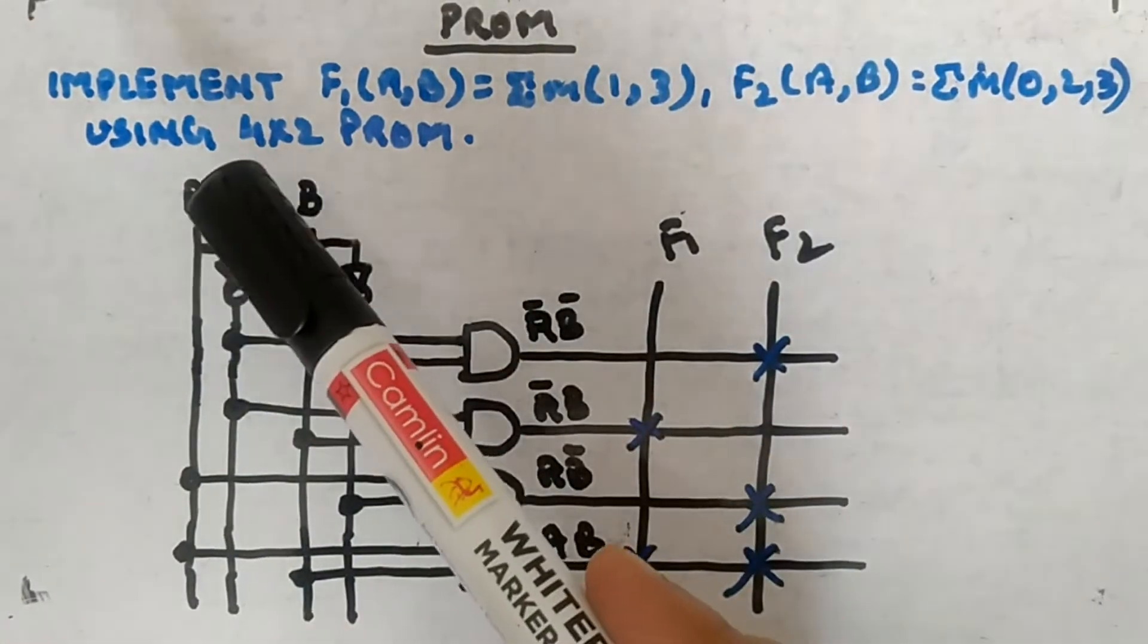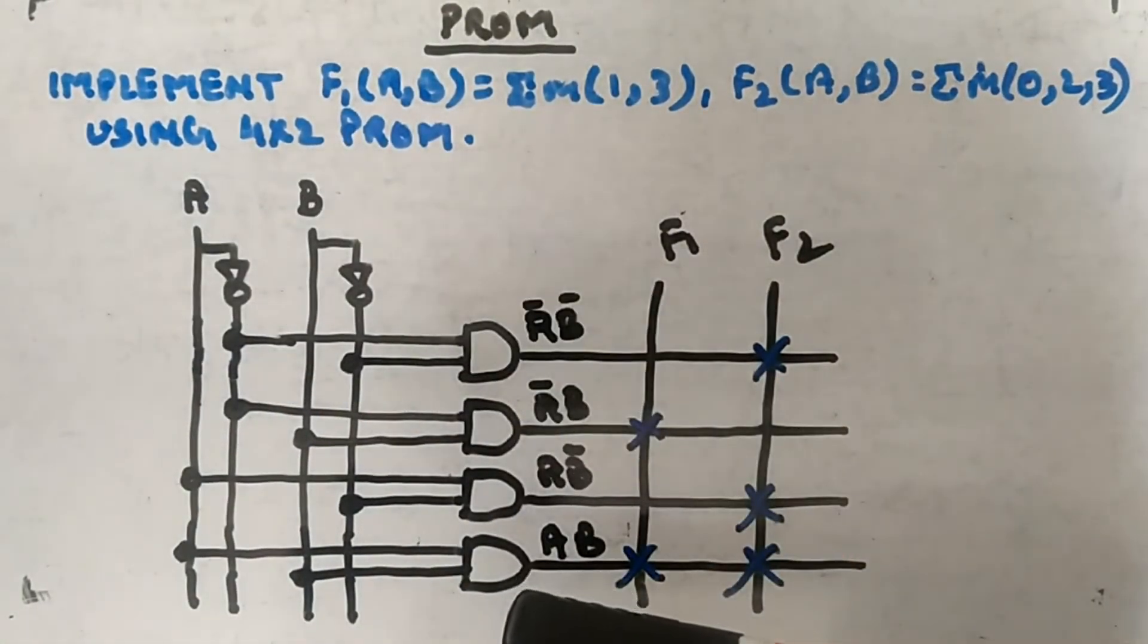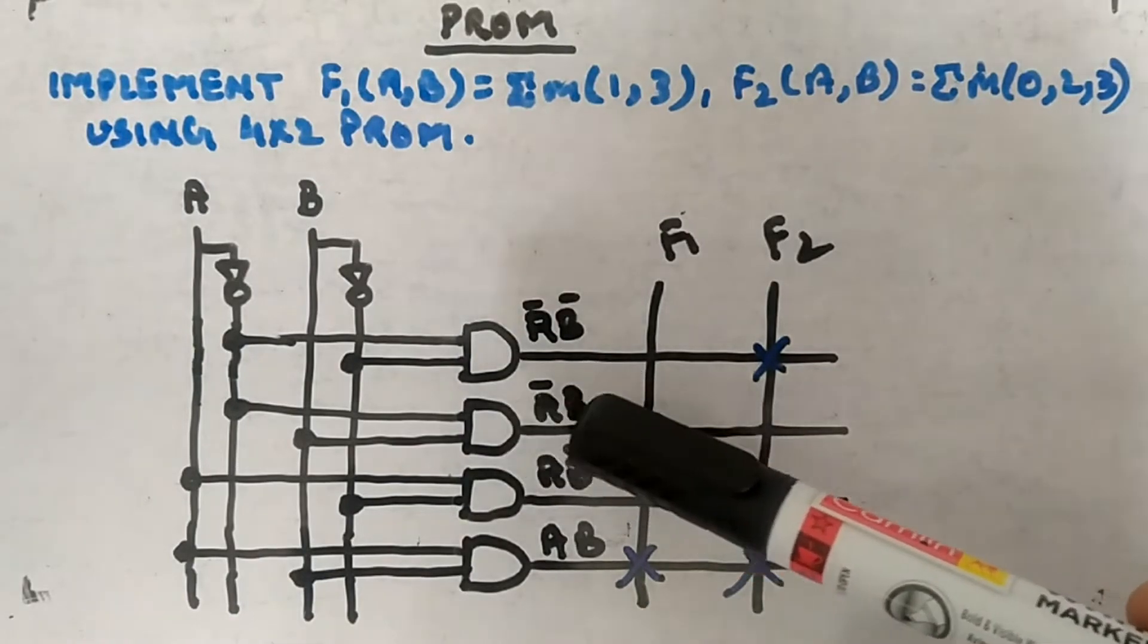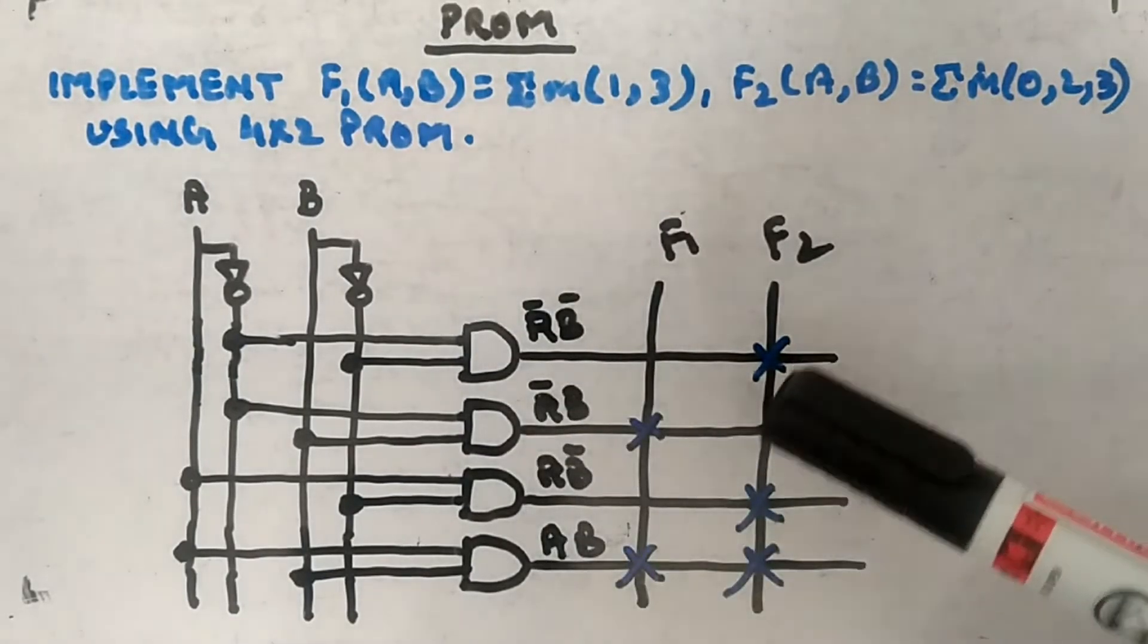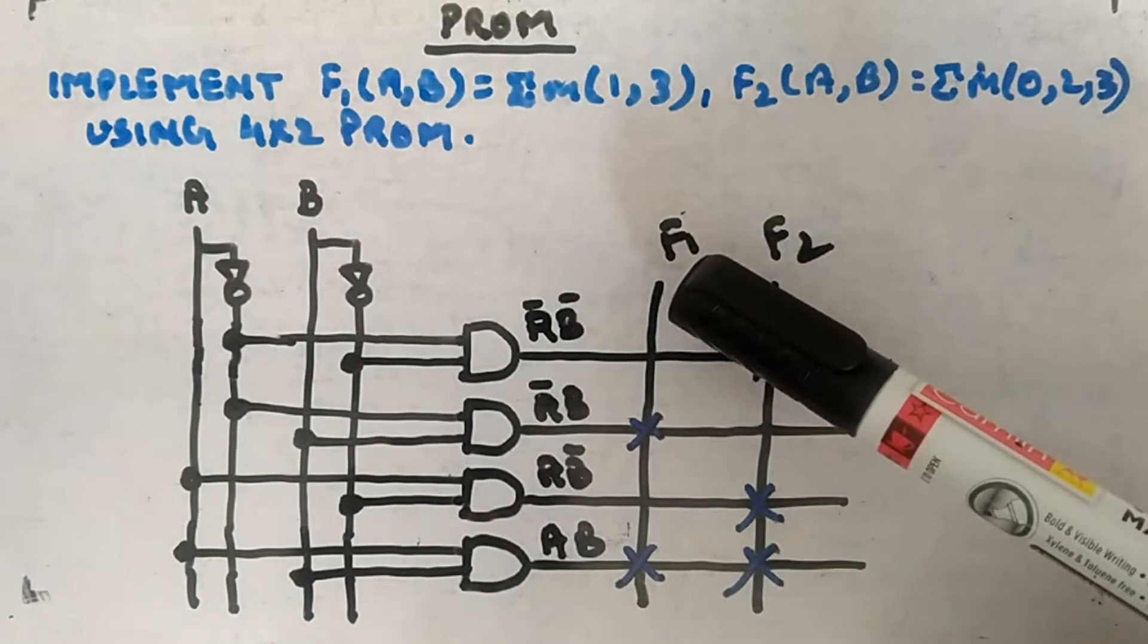Whether it is required in your functions or not, all the minterms will be generated since two variables are there. So four minterms are there: A bar B bar, A bar B, A B bar, AB.